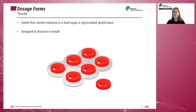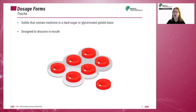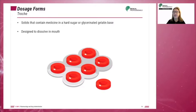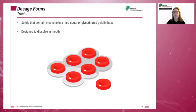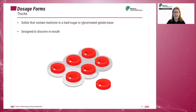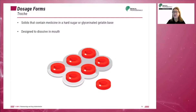Troches are solids that contain medicine in a hard or glycerinated gelatin base and are designed to dissolve in the mouth — for example, lozenges or pastilles.